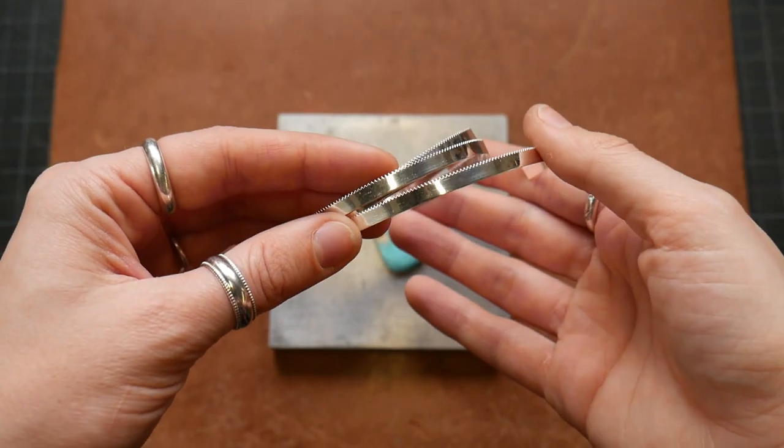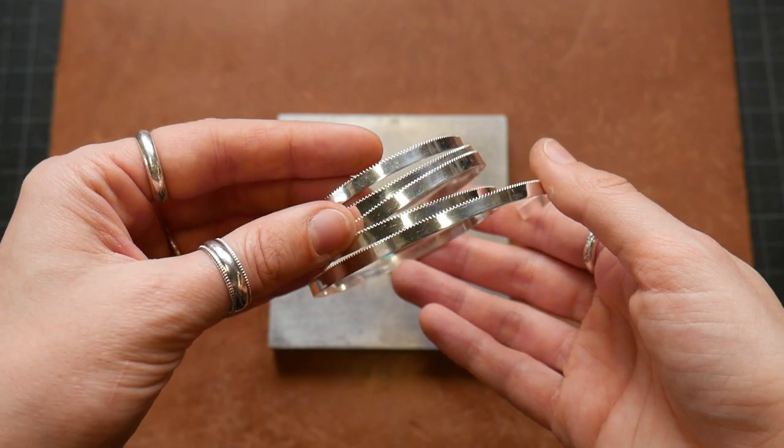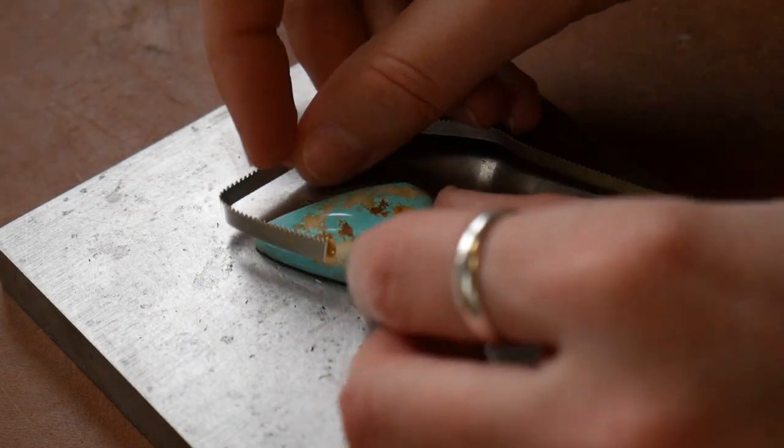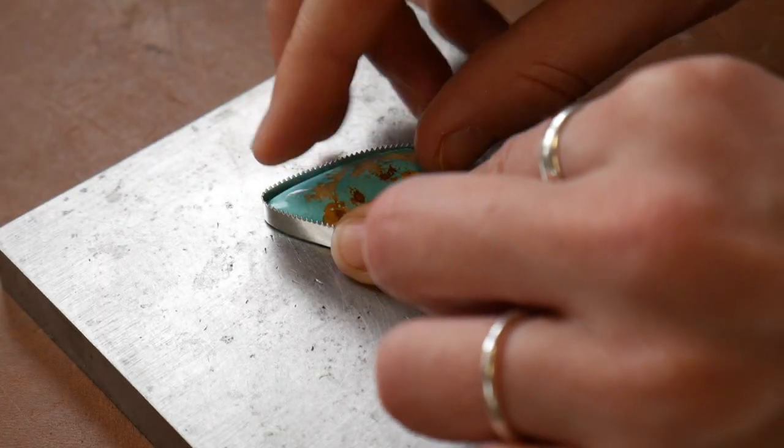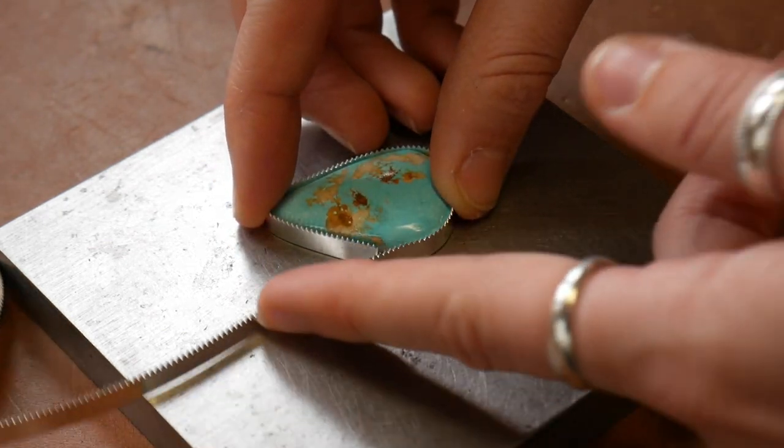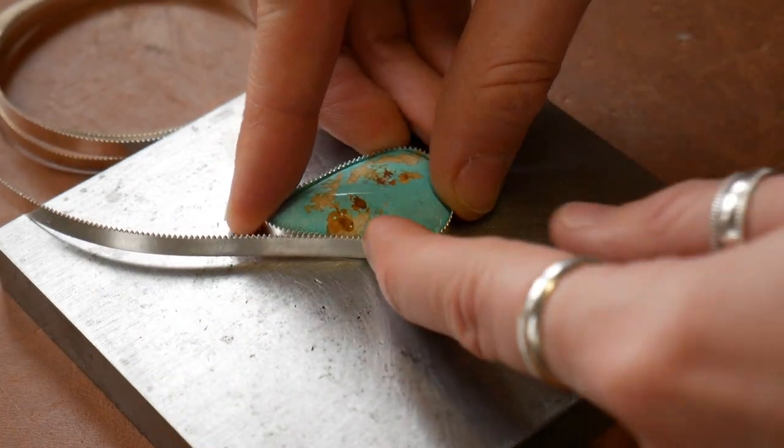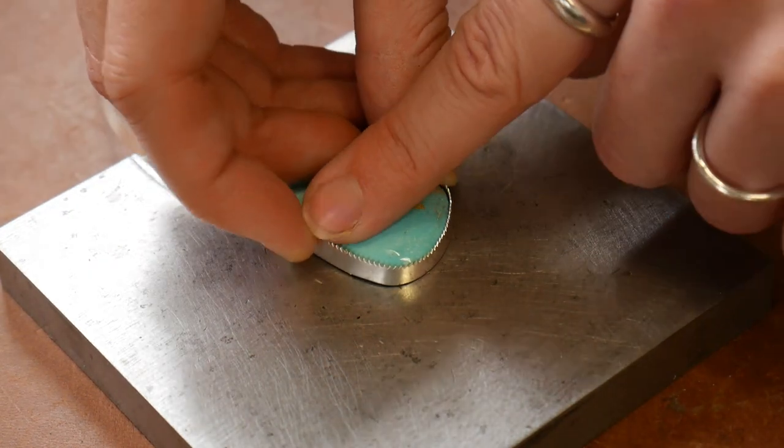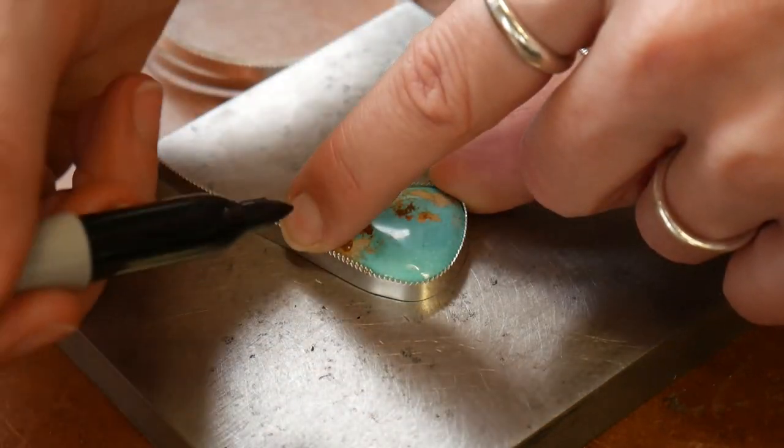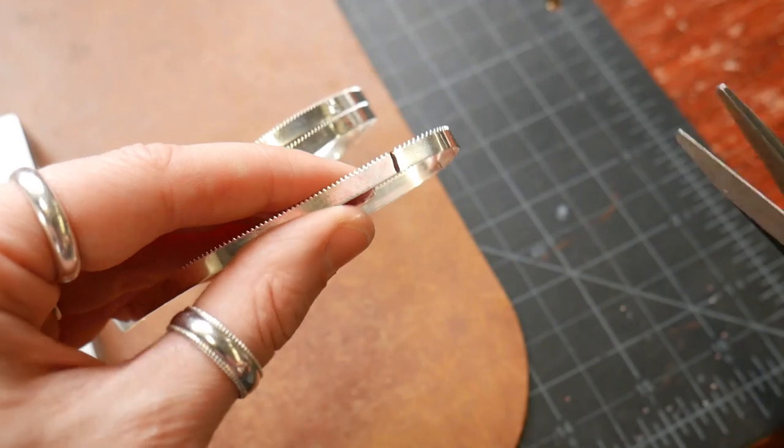To get started, I'm going to be using 26 gauge fine silver serrated wire for my bezel. I'm just going to take this wire and wrap it snugly around the stone. And where the two ends overlap, I'm just going to make a mark with my Sharpie so I know where to trim the wire.